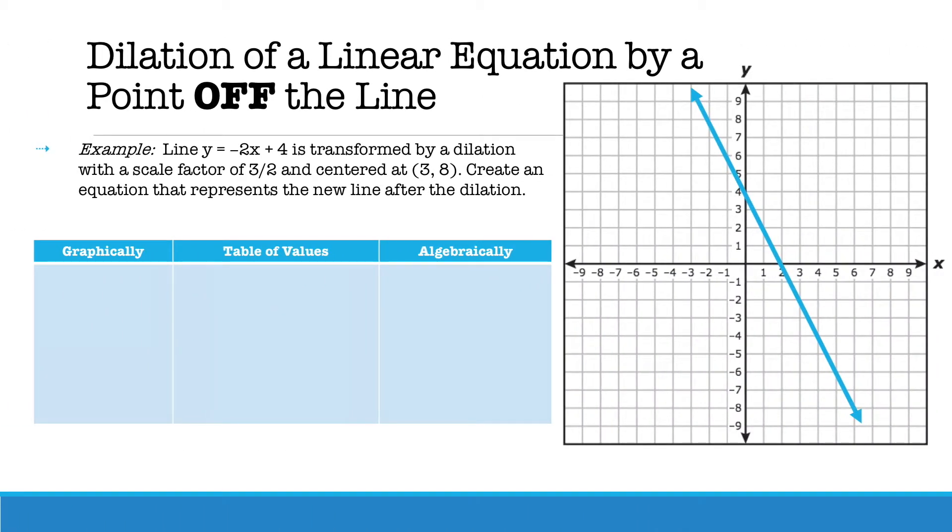For a dilation of a linear equation by a point off the line, again, you first want to check is your point on or off the line. So in this example, we have y equals negative 2x plus 4 is transformed by a dilation with a scale factor of 3 halves and centered at the point (3, 8).